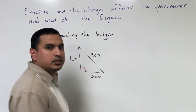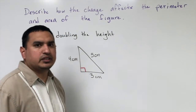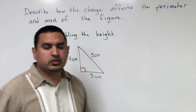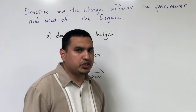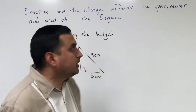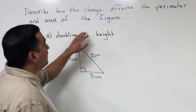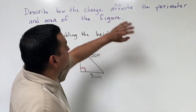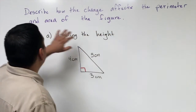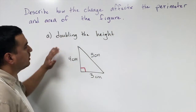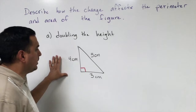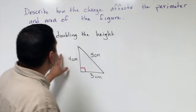This lesson deals with effects of changing dimensions on different shapes. We're going to start with looking at what happens when I change the perimeter and the area of this right triangle.